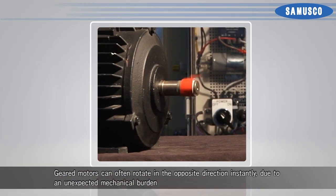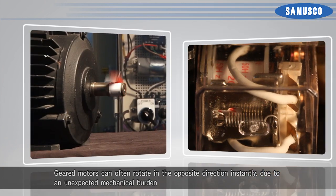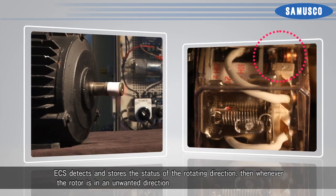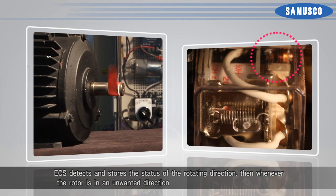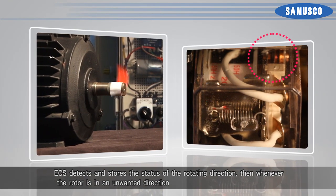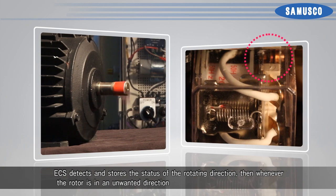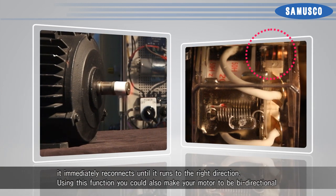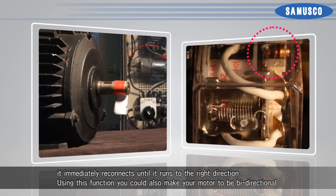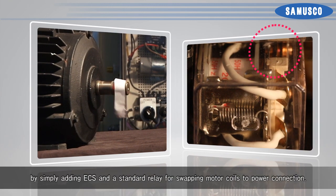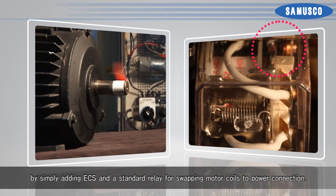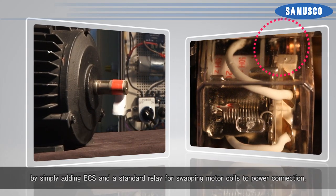Geared motors can often rotate in the opposite direction instantly due to an unexpected mechanical burden. ECS detects and stores the status of the rotating direction. Whenever the rotor is in an unwanted direction, it immediately reconnects until it runs in the right direction. Using this function, you could also make your motor bi-directional by simply adding ECS and a standard relay for swapping motor coils to the power connection.